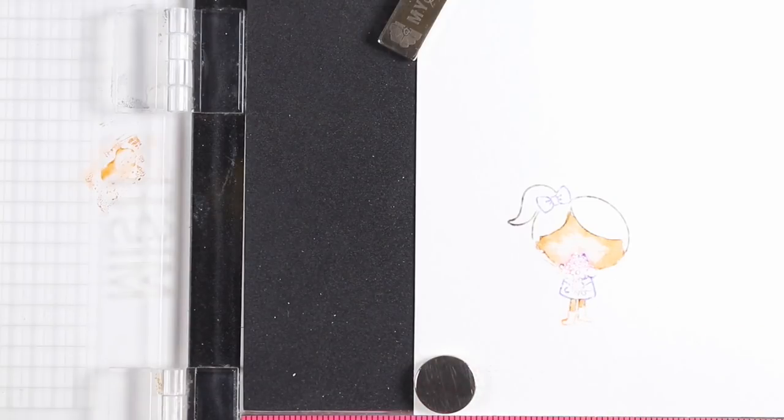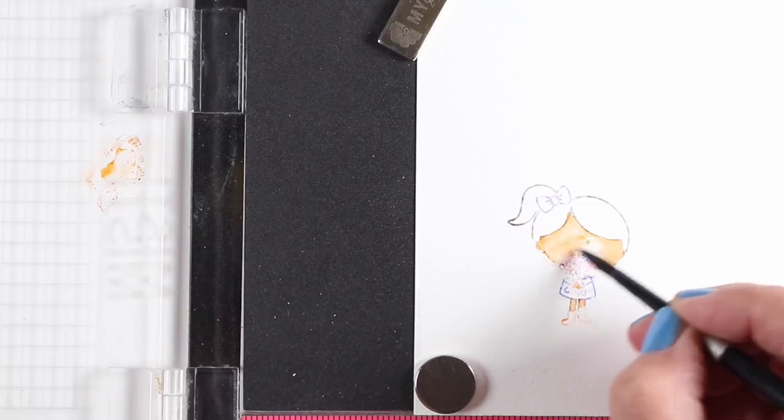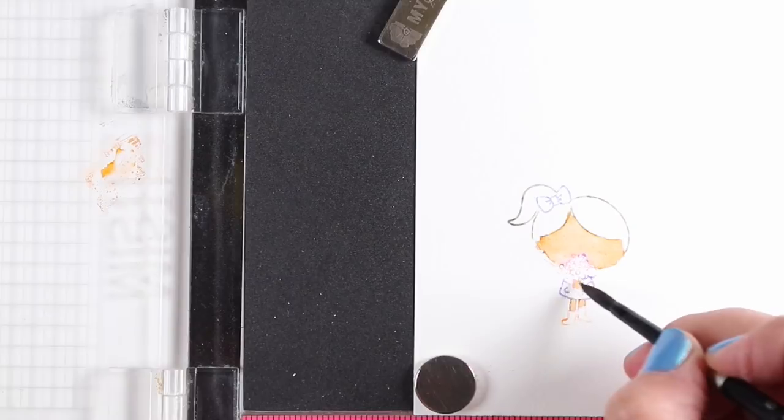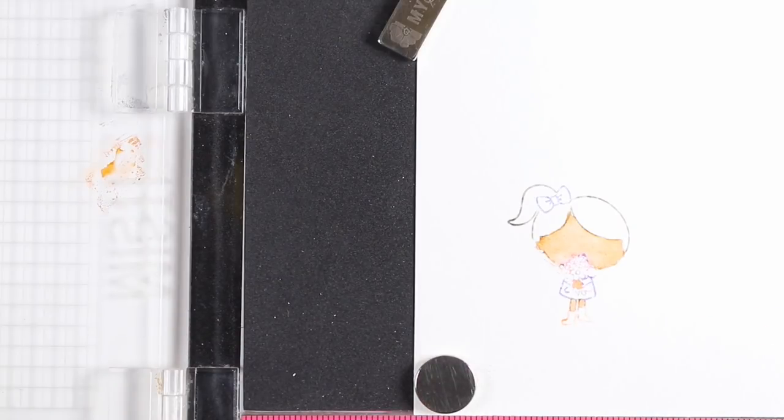So just kind of keep adding color in, trying to decide what my water's going to do. I had a pretty big puddle on her face, so I was waiting to see if the water was going to move. And it didn't move the color very much, so I just moved it with my brush.